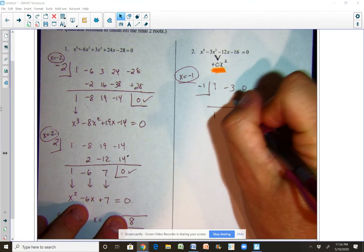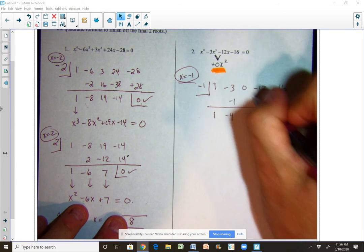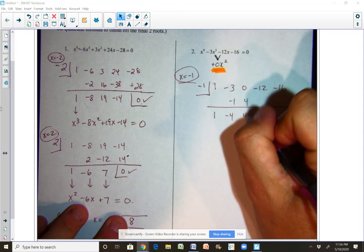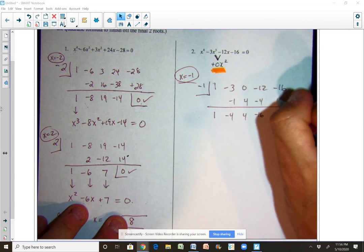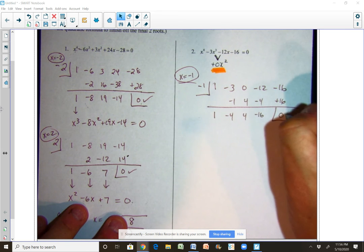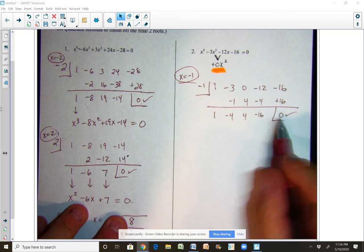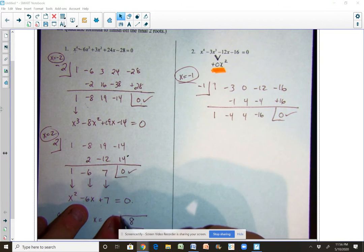So add straight down, multiply diagonally, add straight down and multiply diagonally, add straight down, multiply diagonally, add straight down and multiply diagonally, and sure enough we get what we expected—we get a remainder of zero, so therefore that was a root, if that's what we were expecting.